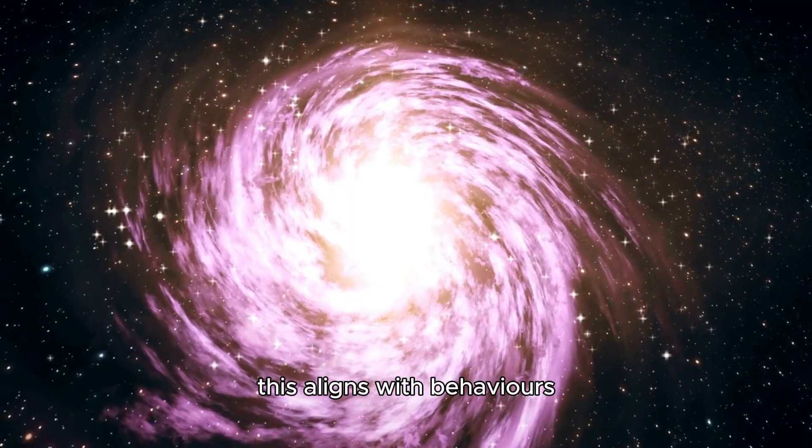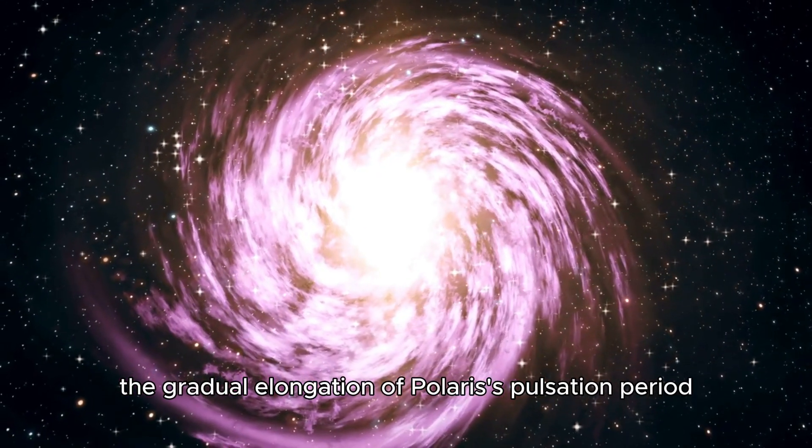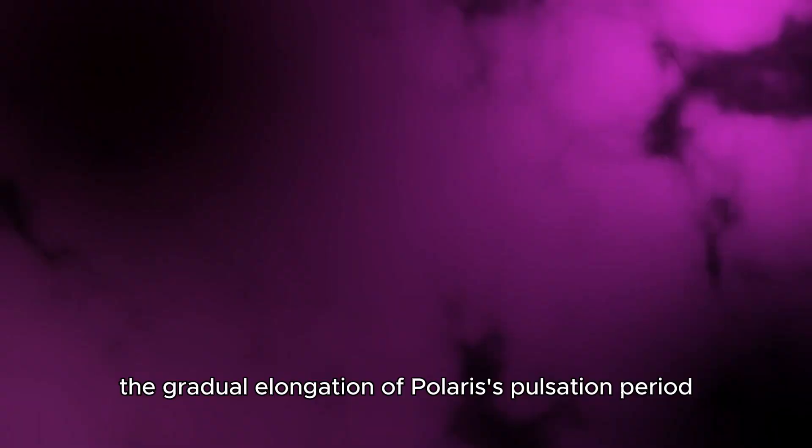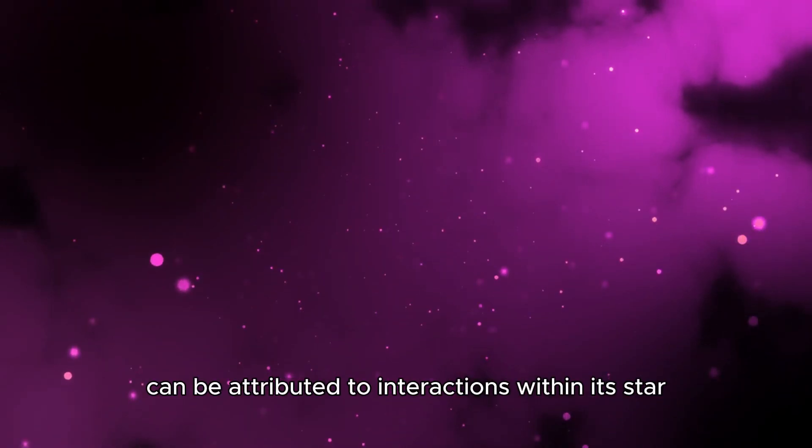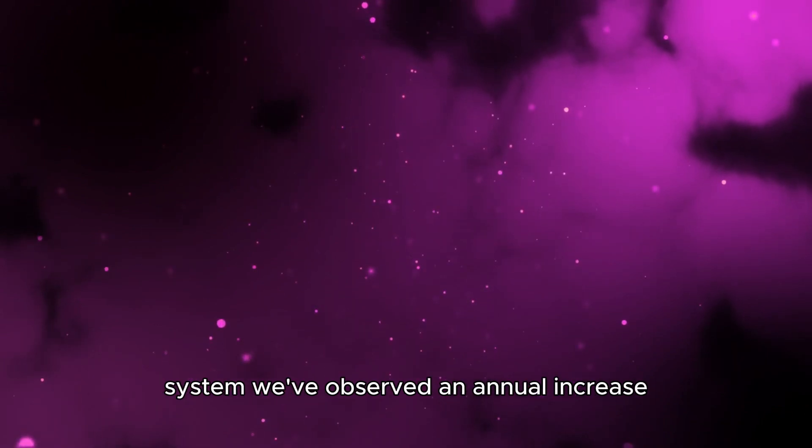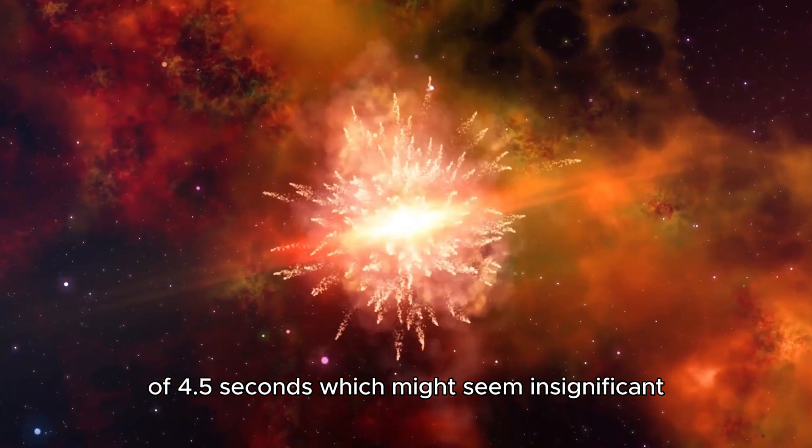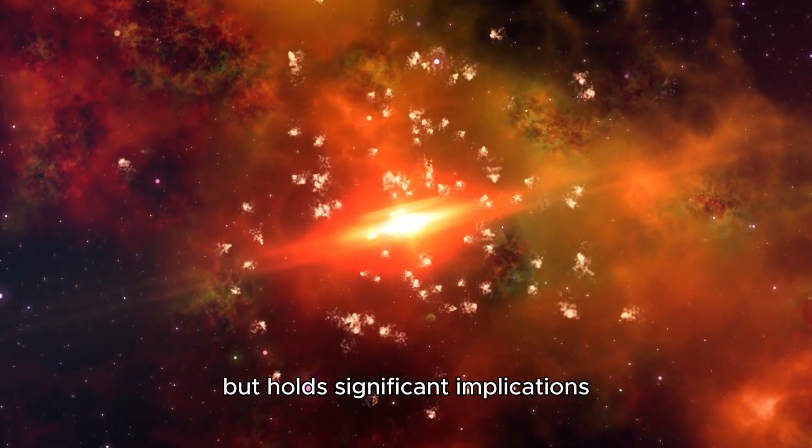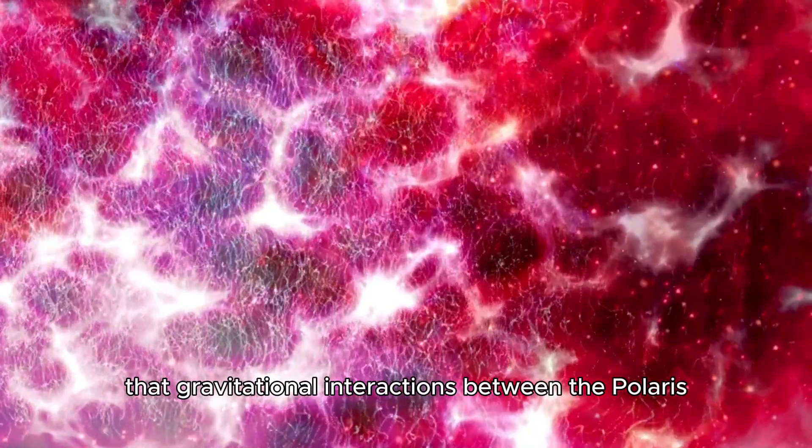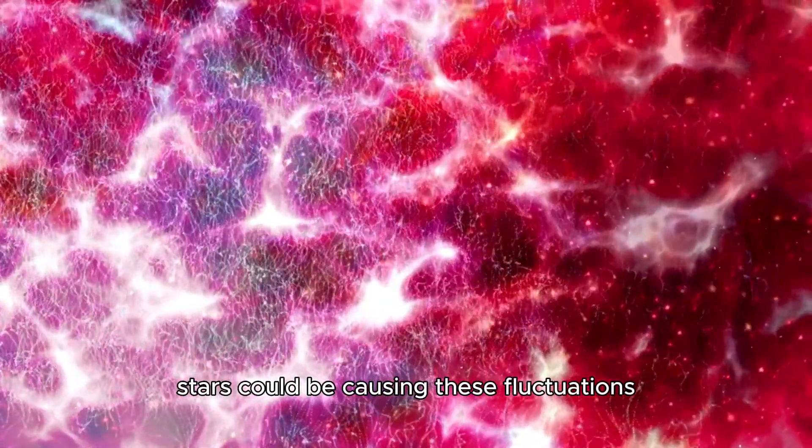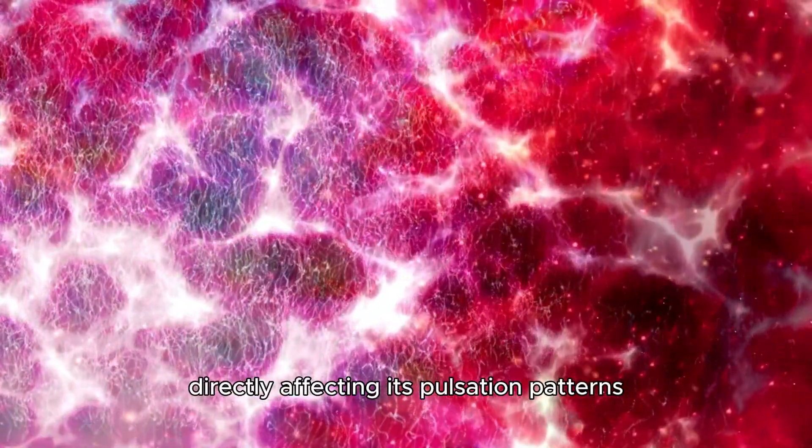This aligns with behaviors typically observed in stars nearing their end. The gradual elongation of Polaris' pulsation period, which was once stable, can be attributed to interactions within its star system. We've observed an annual increase in the pulsation duration of 4.5 seconds, which might seem insignificant but holds significant implications. Some astronomers suggest that gravitational interactions between the Polaris stars could be causing these fluctuations in its atmospheric conditions, directly affecting its pulsation patterns.